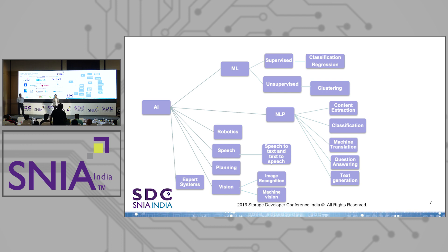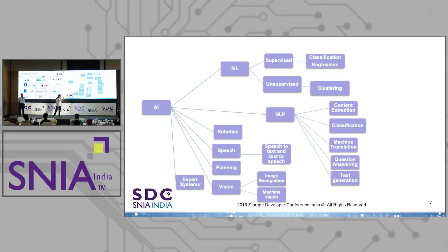NLP is natural language processing — the ability to talk to your computer in natural human language. It involves two components: natural language understanding, which does content extraction, classification, and maps extracted content to its database; and natural language generation, which plans and renders a response back to the user in sentence form. Speech recognition also falls under NLP, converting speech to text and text back to speech.